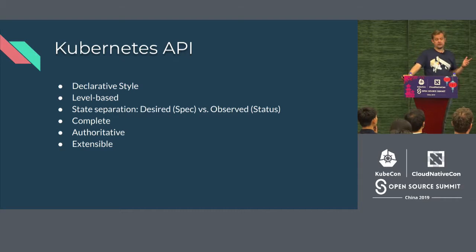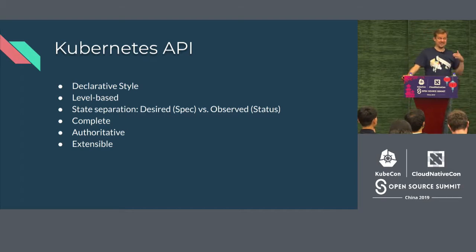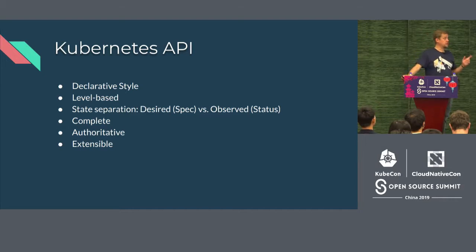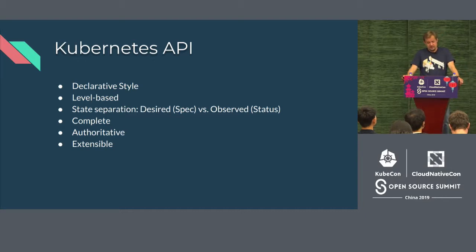With its declarative style, users express what they want — the desired state of their system — versus an imperative style API that specifies steps to achieve that state. It is level-based, which enables robust behavior even if you're missing some intermediate state changes. It is complete and authoritative, and most importantly, it's extensible. That extensibility is very important, and in fact it's what I've been working on for the last couple of years: the extensibility of Kubernetes and writing Kubernetes-native applications.